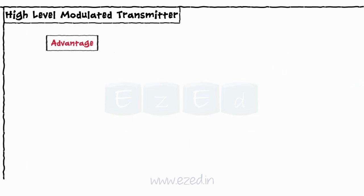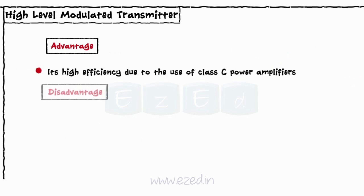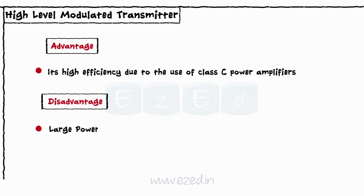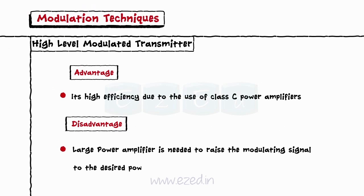The advantage of high level modulation is its high efficiency, due to the use of class C power amplifiers. The disadvantage is that a large power amplifier is needed to raise the modulating signal to the desired power level.